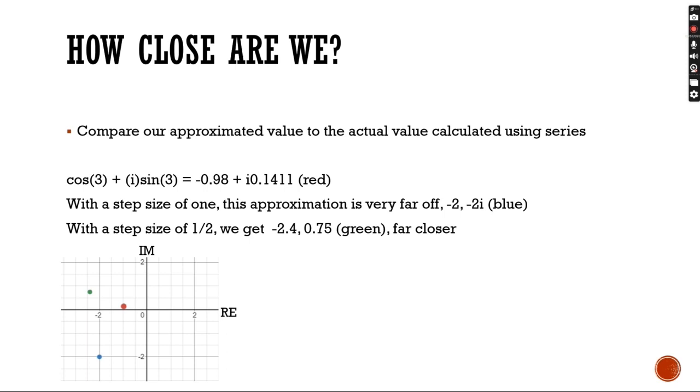Comparing our approximated value to the actual value calculated using series, we get negative 0.98 plus 0.1411i, which is the red dot on the graph. With a step size of 1, the approximation for this point is very far off. Negative 2 minus 2i, which is the point that we got in the previous slide. That is the blue point on this graph. With a step size of 1 half, however, we get negative 2.4, 0.75, which is the green point, which is far closer than the approximation we got on the previous slide.